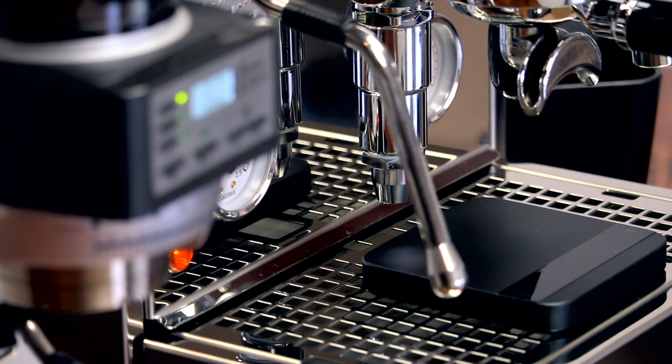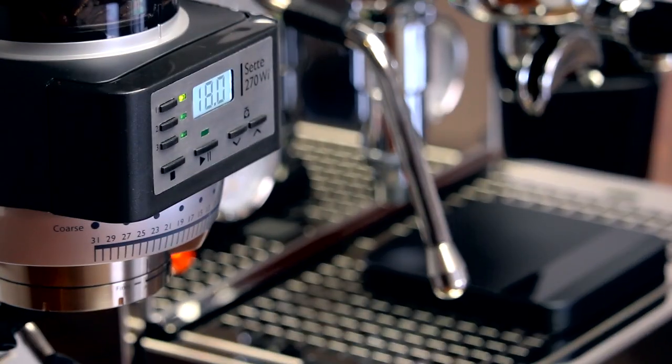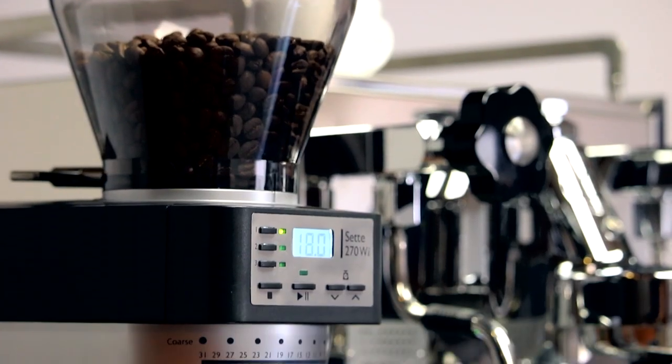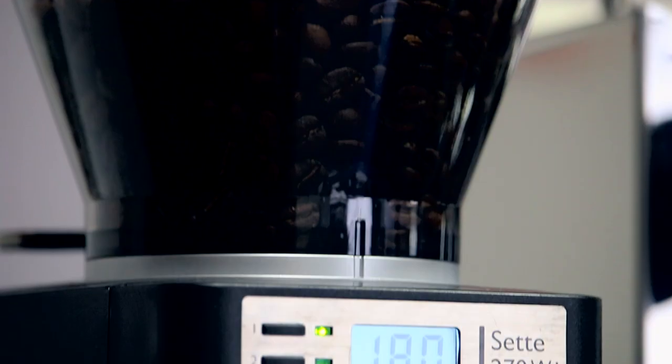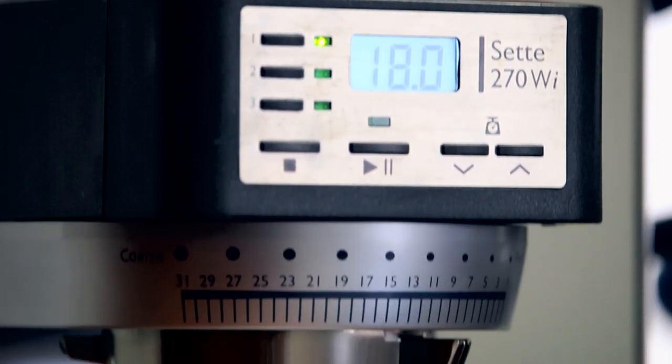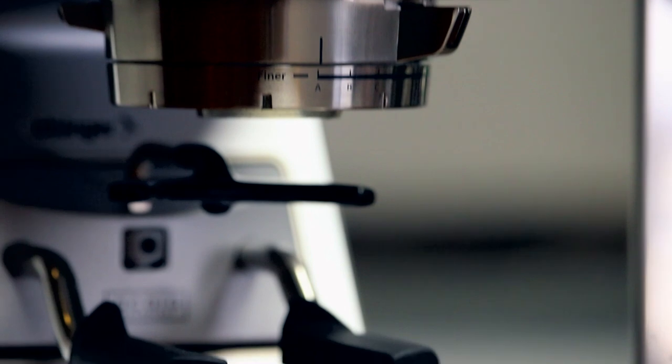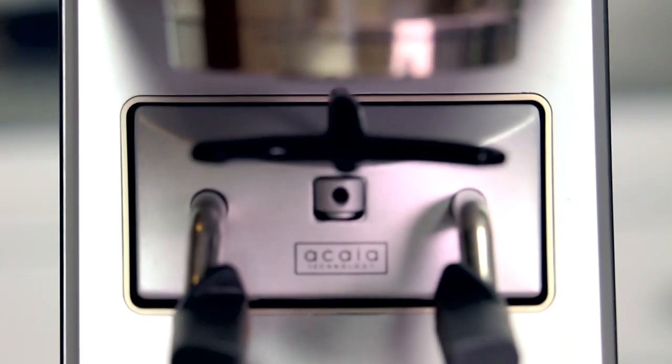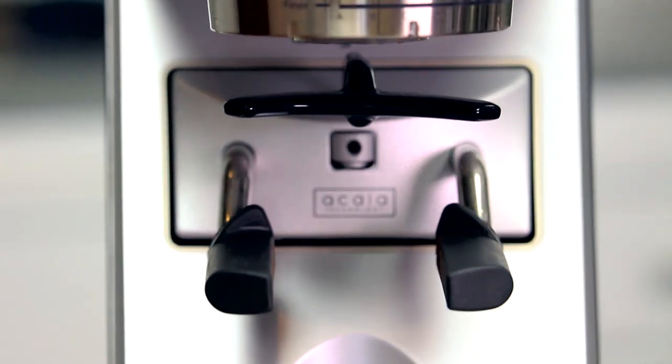With the 270WI, Barazza has taken the venerable Settay 270 and added weight-based dosing to achieve a level of convenience not offered by any home espresso grinder. And through collaboration with Akaia, Barazza has made the built-in scale incredibly accurate.